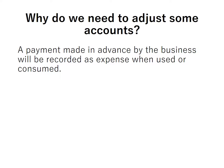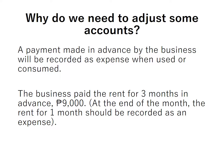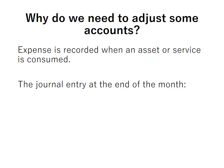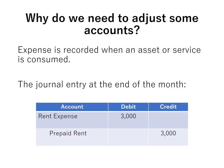Next reason: a payment made in advance by the business will be recorded as expense when used or consumed. Example: the business paid the rent for three months in advance, P9,000. So, at the end of the month, the rent for one month should be recorded as an expense — this is our prepaid rent. Expense is recorded when an asset or service is consumed. The journal entry at the end of the month will involve a debit to rent expense P3,000, which is the consumed part of the prepaid rent, then a credit to prepaid rent P3,000, in order to reduce prepaid rent by P3,000 — the consumed part of the advance rental payment.